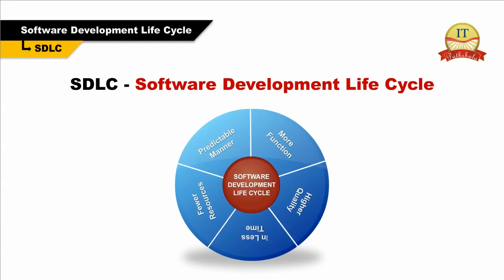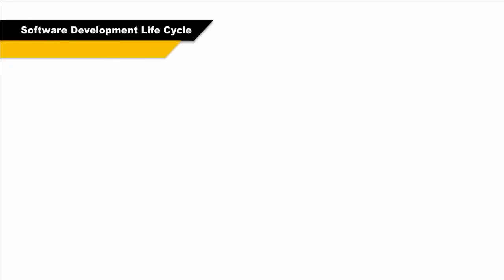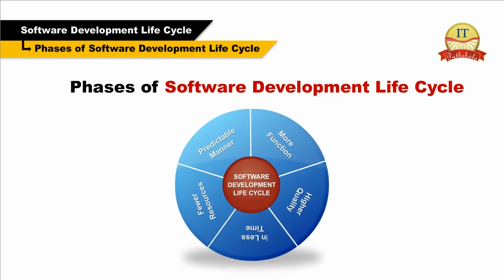Software development lifecycle is popularly known as SDLC. The software development lifecycle is a system used during the creation of a software program. Software development lifecycle ensures that we produce more functionality, with higher quality, in less time, with fewer resources, and in a predictable manner. There are a number of different software development lifecycle models that are used, and each of them showcases a number of procedures that can be used during the development of software.